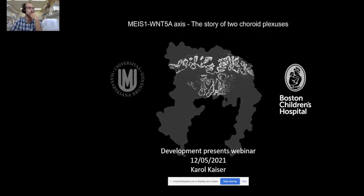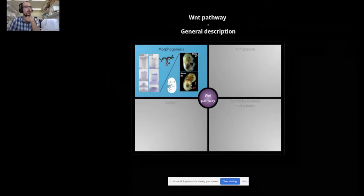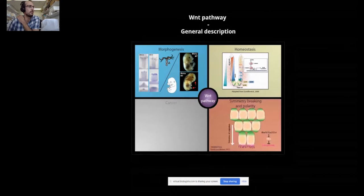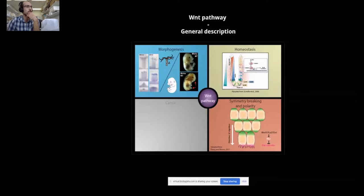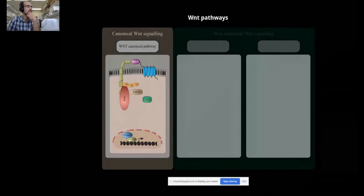Today I would like to present our findings regarding a novel MEIS1-WNT5A signaling axis and its role in the embryonic development of the choroid plexuses. The WNT pathway represents an evolutionarily conserved signaling pathway that is involved in fundamental biological processes including morphogenesis, homeostasis, establishment of cell polarity and symmetry breaking, and is also an underlying cause of numerous pathological conditions such as cancer.